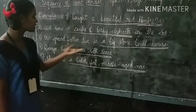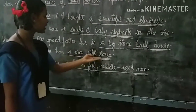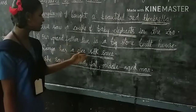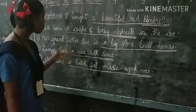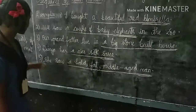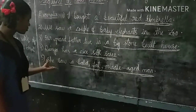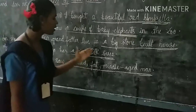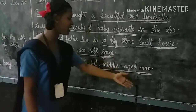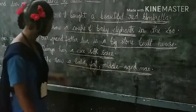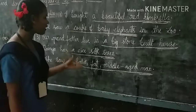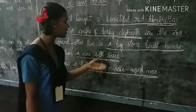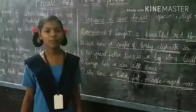Ramya has a nice silk sari. Sari is a noun. A nice silk is a phrase. So, a nice silk sari is a noun phrase. She saw a bald, fat, middle-aged man. Man is a noun. A bald, fat, middle-aged is a phrase. So, a bald, fat, middle-aged man is a noun phrase.